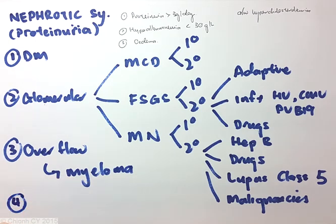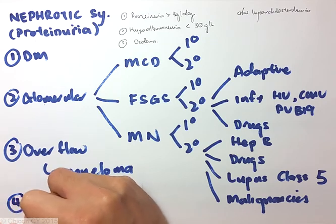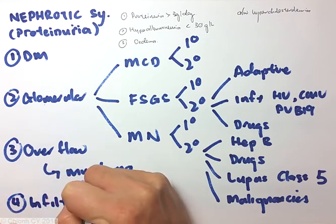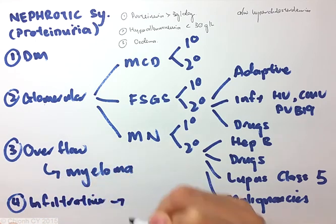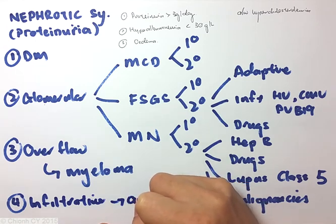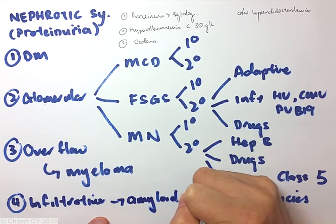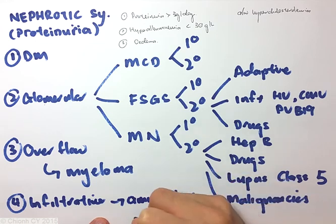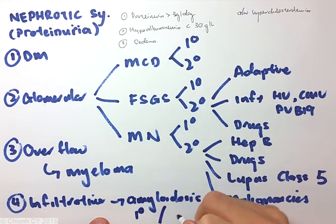Lastly, it may be due to an infiltrative condition. An example of which would be amyloidosis. This can also be a primary amyloidosis or a secondary amyloidosis.